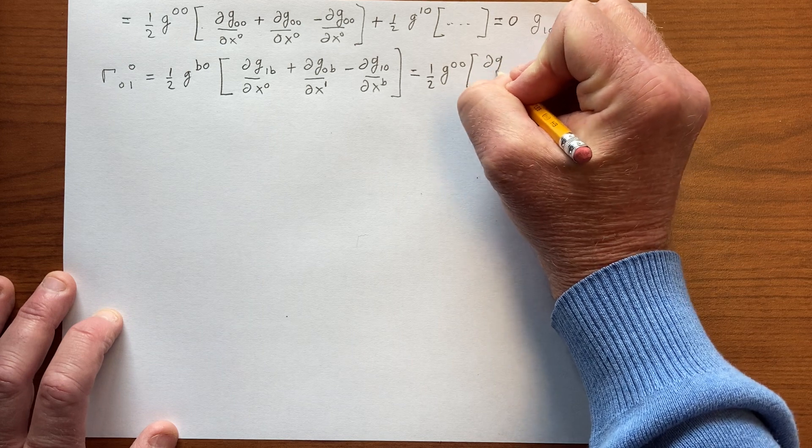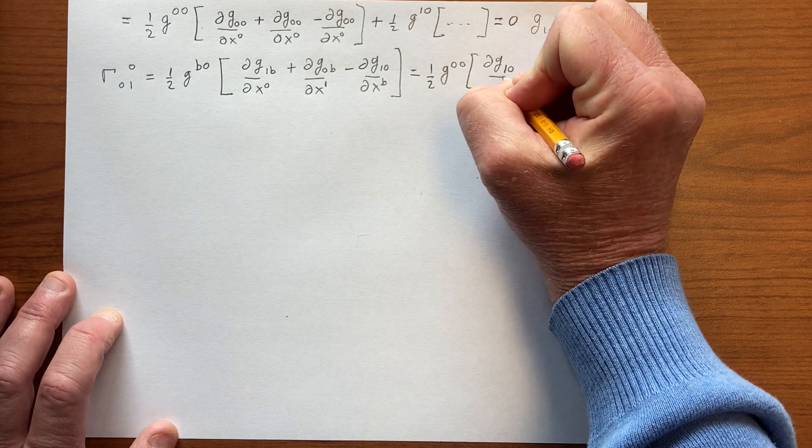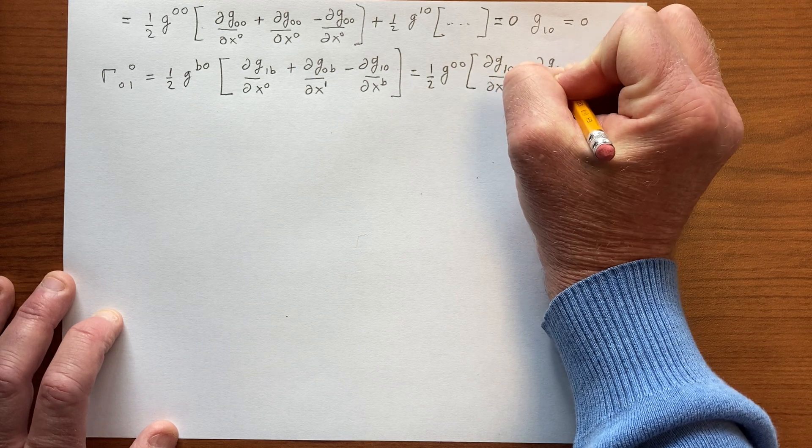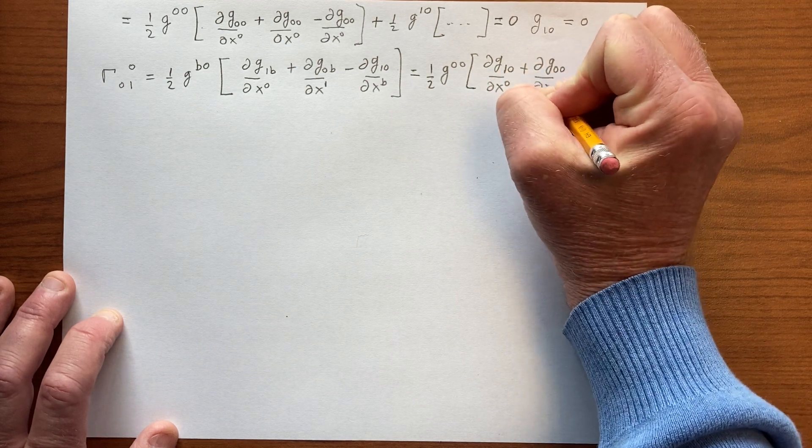So we really have one term here to consider. ½g^00 times ∂g_10/∂x^0 plus ∂g_00/∂x^1.